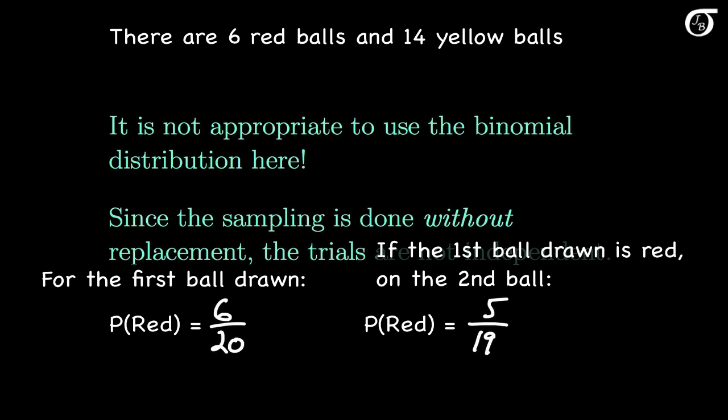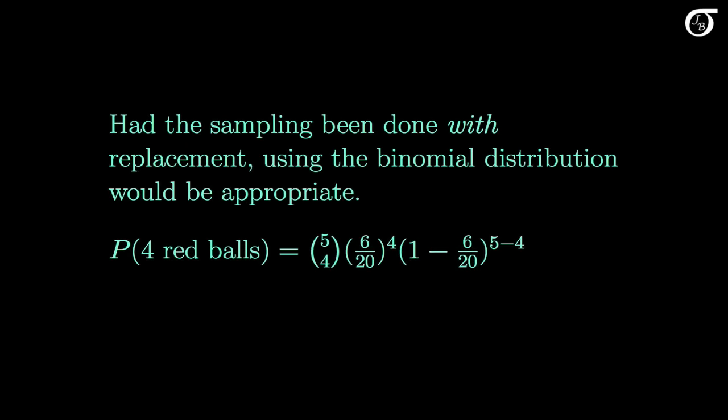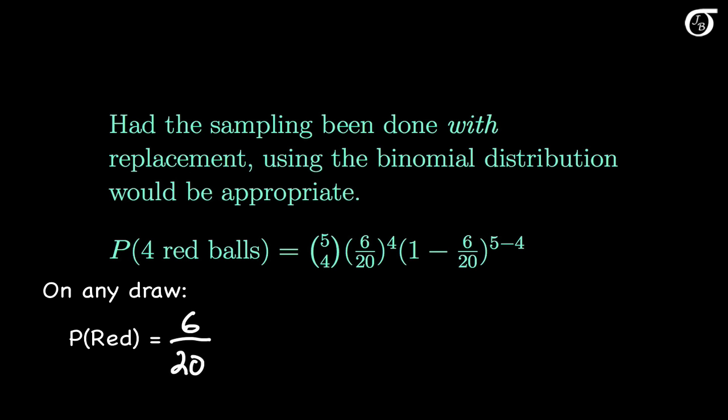The trials are not independent, and independence is one of the necessary conditions for the binomial distribution to hold. Suppose instead that the sampling had been done with replacement, meaning that when a ball is chosen we look at the color and count it, but place it back in the urn so that it might be chosen again. Then the probability of getting a red ball on any given trial is simply 6 out of 20, regardless of what happened on the other trials. And since the trials would be independent here, the binomial distribution would be appropriate.